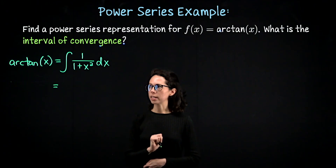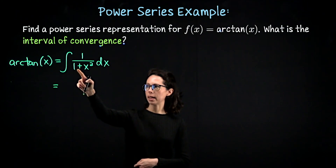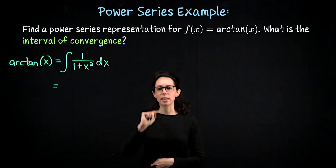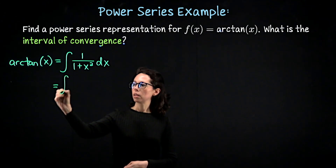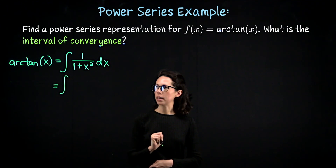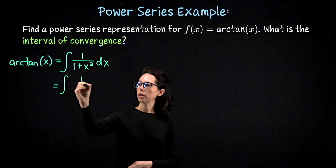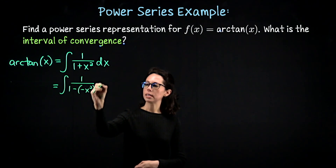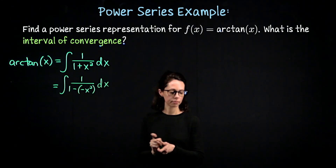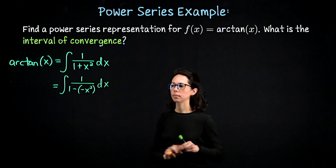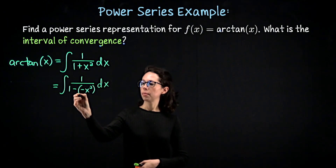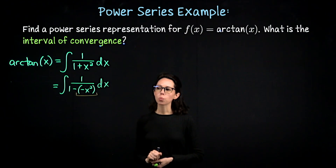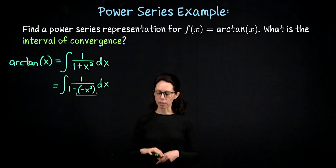We've done these exercises before. Let me go ahead and take 1 plus x squared in the denominator and write that as 1 minus negative x squared, so that arctan of x will be an antiderivative of 1 over 1 minus negative x squared dx. This negative x squared term is what will become the base of our geometric-looking expansion.